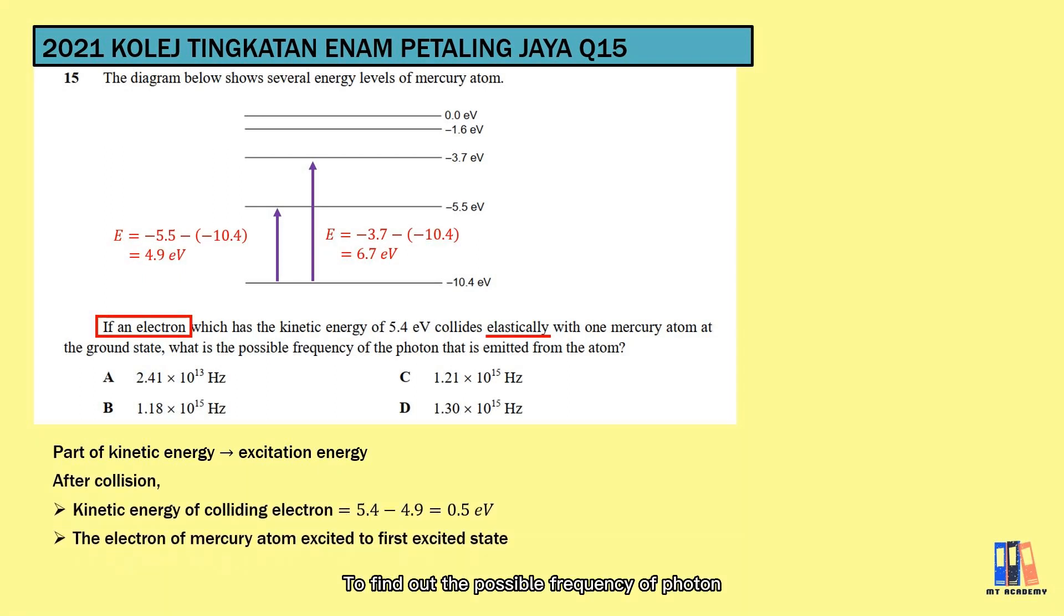To find out the possible frequency of photon when the electron returns to the ground state, we will take the 4.9 eV which is the difference between E₂ and E₁ to calculate the frequency of photon emitted. This will give us the frequency of 1.18 times 10 to the power of 15 Hz.